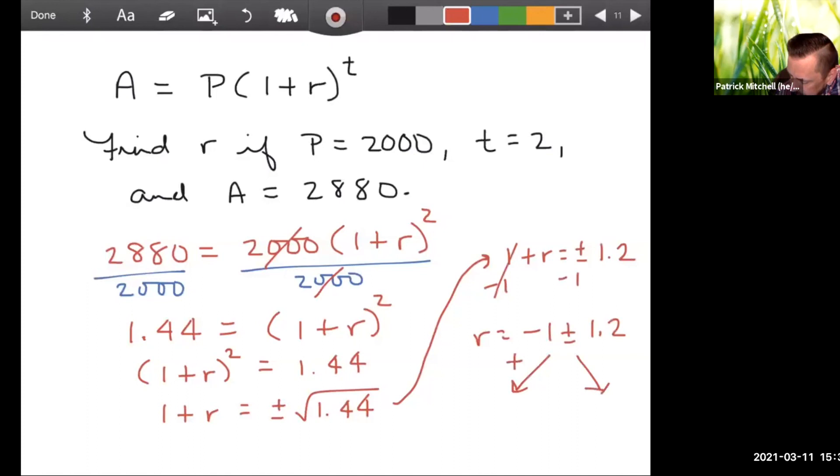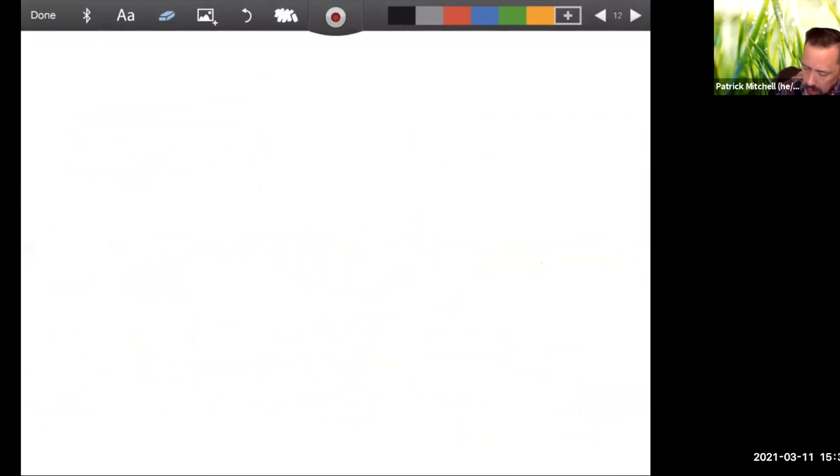So that gives you two different answers. With the plus, it gives you negative 1 plus 1.2, which is 0.2. With the minus, it gives you negative 1 minus 1.2, which is negative 2.2. So what was the question again? It was to find R, which is the rate, the interest rate. So this seems to be saying that the interest rate is either 0.2 or negative 2.2. Well, you probably won't be too surprised to hear me say that only one of those answers makes sense.